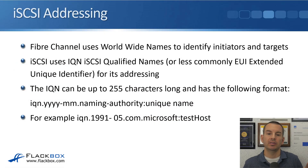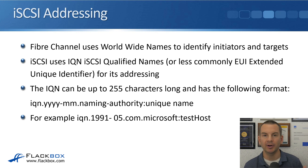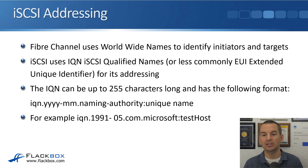Fibre Channel uses WWPNs to identify initiators and targets. iSCSI is also a SAN protocol sharing many of the same characteristics, so understanding Fibre Channel aids understanding of iSCSI too. Fibre Channel uses worldwide names, while iSCSI uses IQNs — iSCSI Qualified Names — for addressing. You can alternatively use the EUI, Extended Unique Identifier, though IQN is used more commonly.